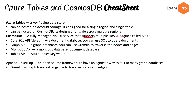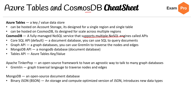Gremlin is a graph traversal language to traverse nodes and edges — you definitely need to know what Gremlin is and be able to identify what it looks like. MongoDB is an open source document database, and the way it works is it has its own data structure called BSON, which is binary JSON — a storage and compute optimized version of JSON that introduces new data types.